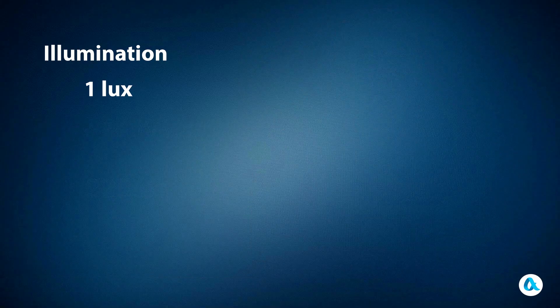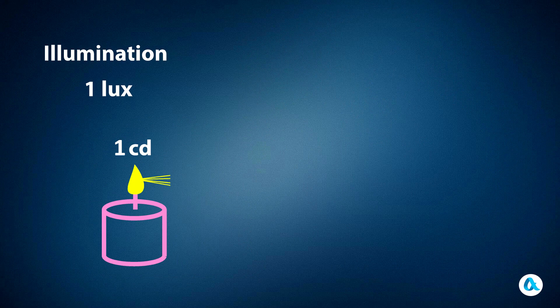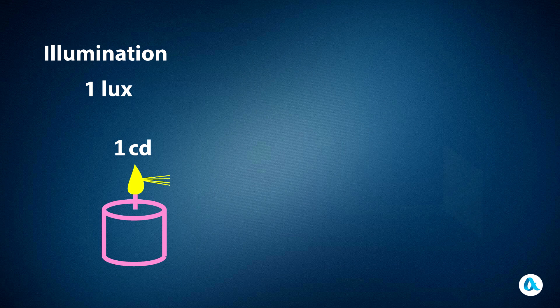And now we have reached the unit of illuminance called lux. Let's once again take a light source with an intensity of one candela so that it uniformly emits light in all directions. At a distance of one meter from it, we will position a surface onto which the light rays from this source will fall perpendicularly at a right angle. And they say that the illuminance of this surface will be equal to one lux.